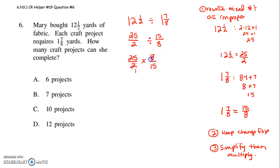2 goes into 2 once. 2 goes into 8 four times. 5 goes into 15 three times. 5 goes into 25 five times. Now I'm going to multiply straight across the top, straight across the bottom. 5 times 4 is 20. 1 times 3 is 3.